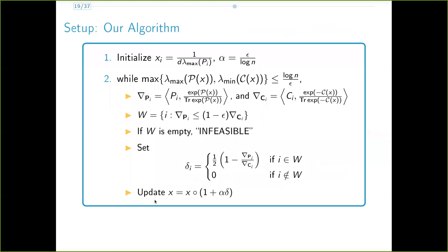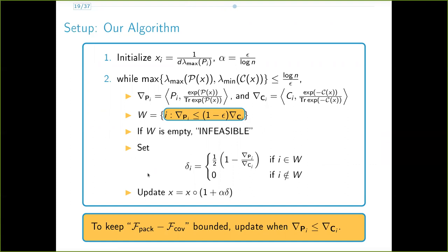Here is our algorithm. We initialize x to be this uniform vector with step size roughly epsilon. Recall again that the termination condition is that one of these eigenvalues must exceed log n over epsilon. We then compute the gradient of the packing potential and the gradient of the covering potential. Since we want the packing potential minus the covering potential to be bounded, we update only those entries of x for which the gradient of the packing potential is smaller than that of the covering potential.